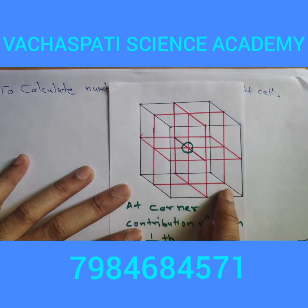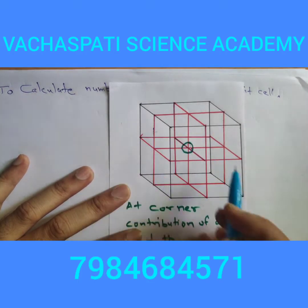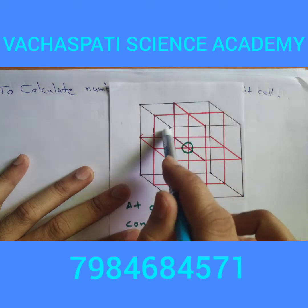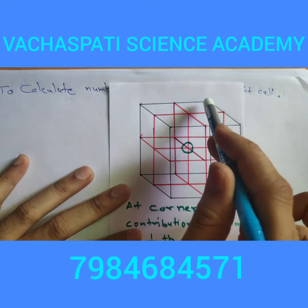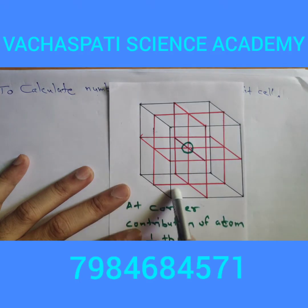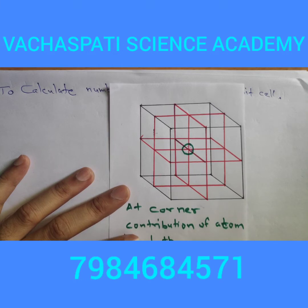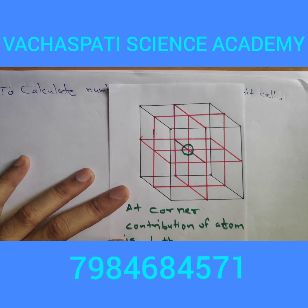The whole atom at the corner is adjacent to another eight unit cells. You can see this is one unit cell, this is another, this is another — top four and below four. So there are eight unit cells that come together to form one cube. One atom present at a corner is shared by eight unit cells.